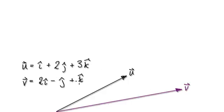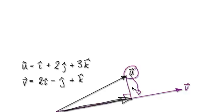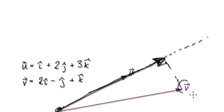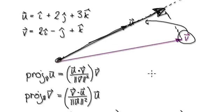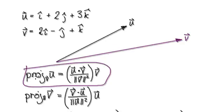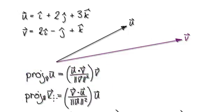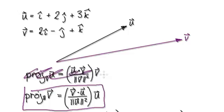Now project V onto U. Earlier we projected U onto V, which gave us this vector here. But now I'm asking you to project V onto U. This thing here is not long enough, so let's extend this. Projecting V onto U — I'm after this vector here. Our formula normally is for projecting U onto V, but now we are projecting V onto U, so we should be using this one here instead. Press pause and have a go.